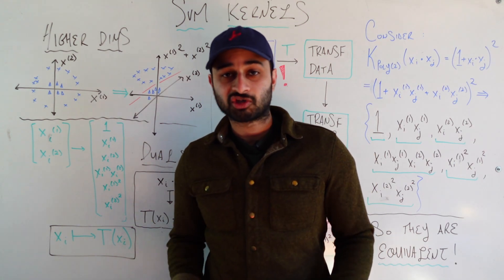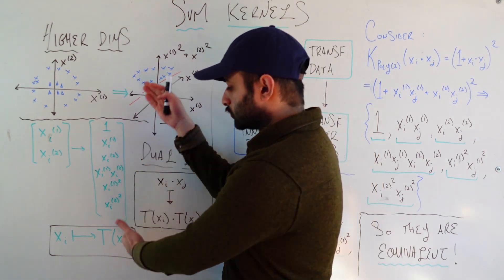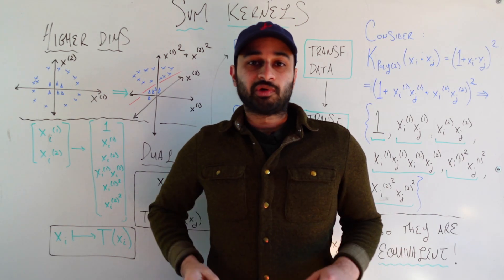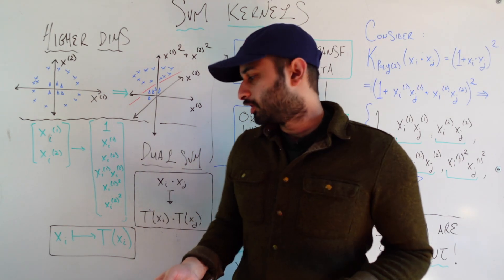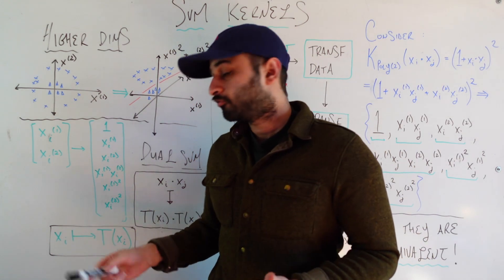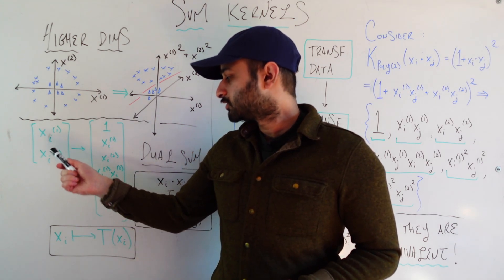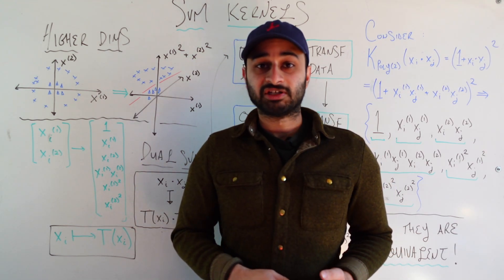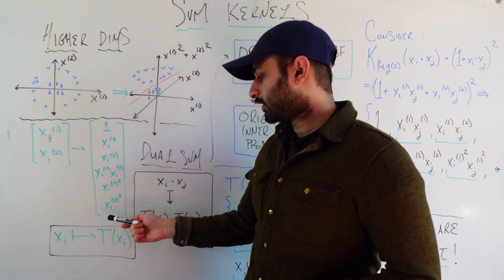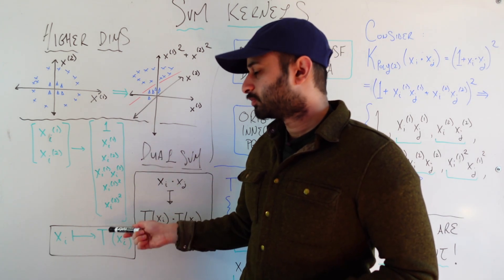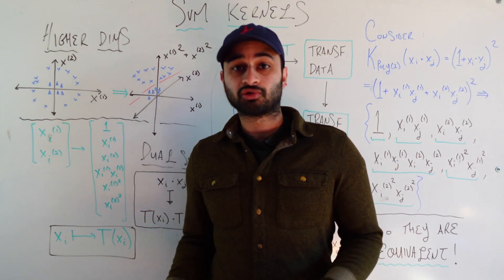And if we wanted to consider all three-way interactions and four-way, our space would just keep growing and growing. So we can write this compactly, whatever the transformation is, as we take some vector xi from our original data and we apply some transformation big T, which takes us to a higher dimensional space. So T of xi is the six dimensional vector, and xi is that original two dimensional vector.